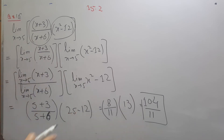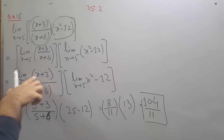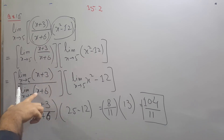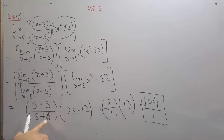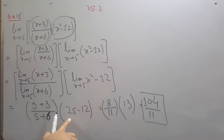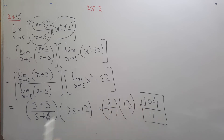Applying shortcuts now since the method is known. Substituting x equals 5: in the first fraction we get 5 over 3, and in the second 5 over 6. The square of 5 is 25, and 25 minus 12 equals 13. Combining: we get 8 over 11 multiplied by 13, which gives 104 divided by 11.